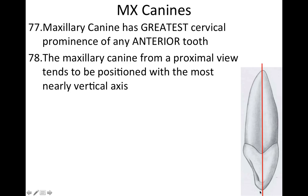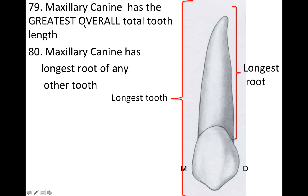I drew a line here to represent that this tooth has the most straight-line axis when viewed from the mesial or distal. These two questions are guaranteed to be on the test or some variation, so you definitely have to know this. The maxillary canine has the greatest overall total tooth length, and the maxillary canine has the longest root of any tooth — so longest tooth and longest root, but not the longest crown.